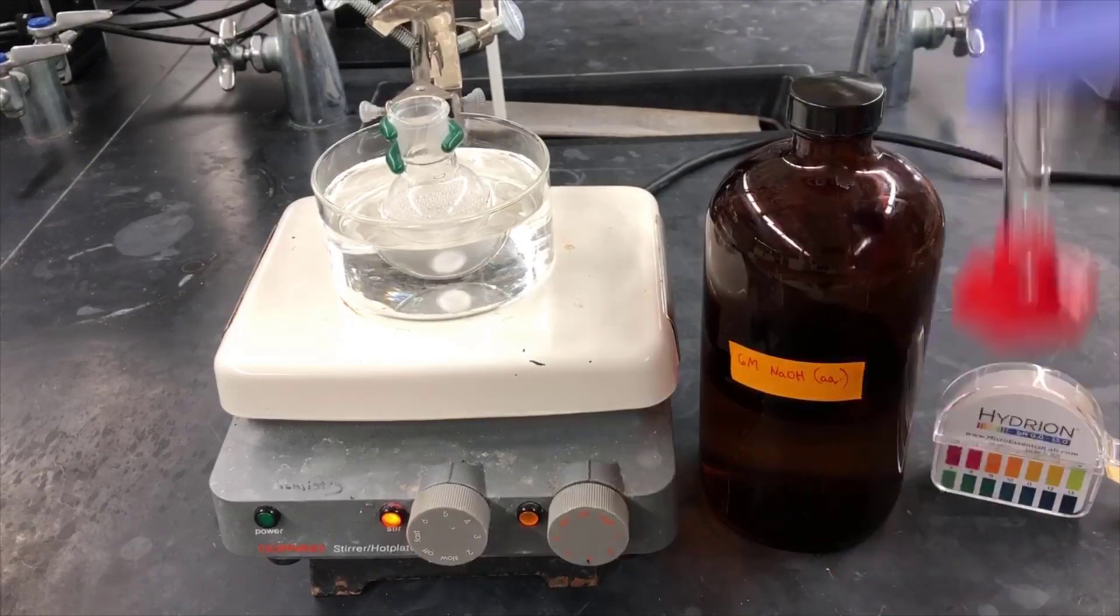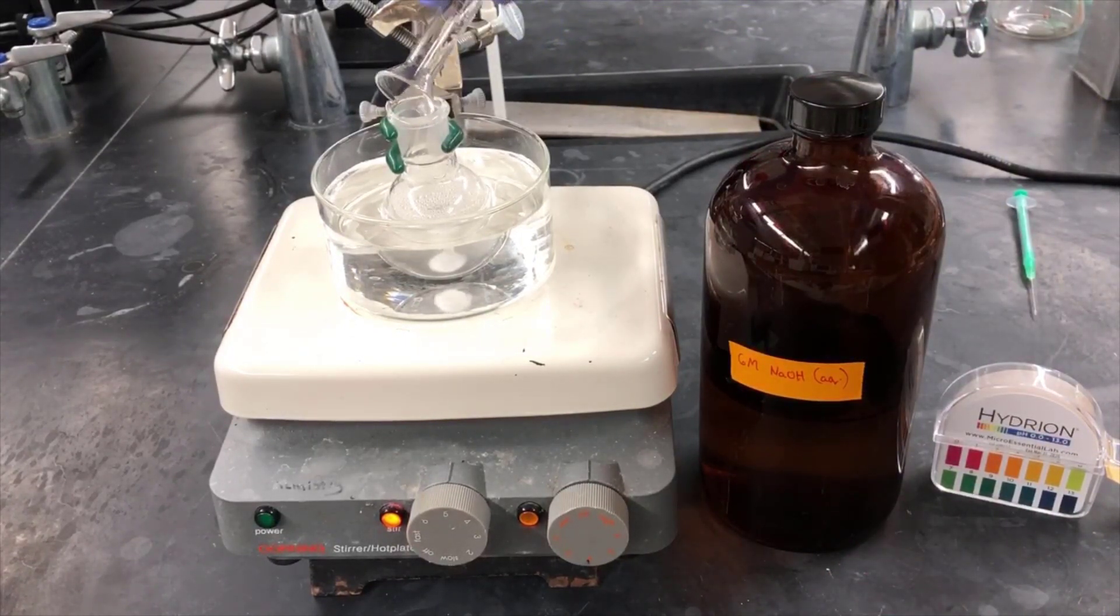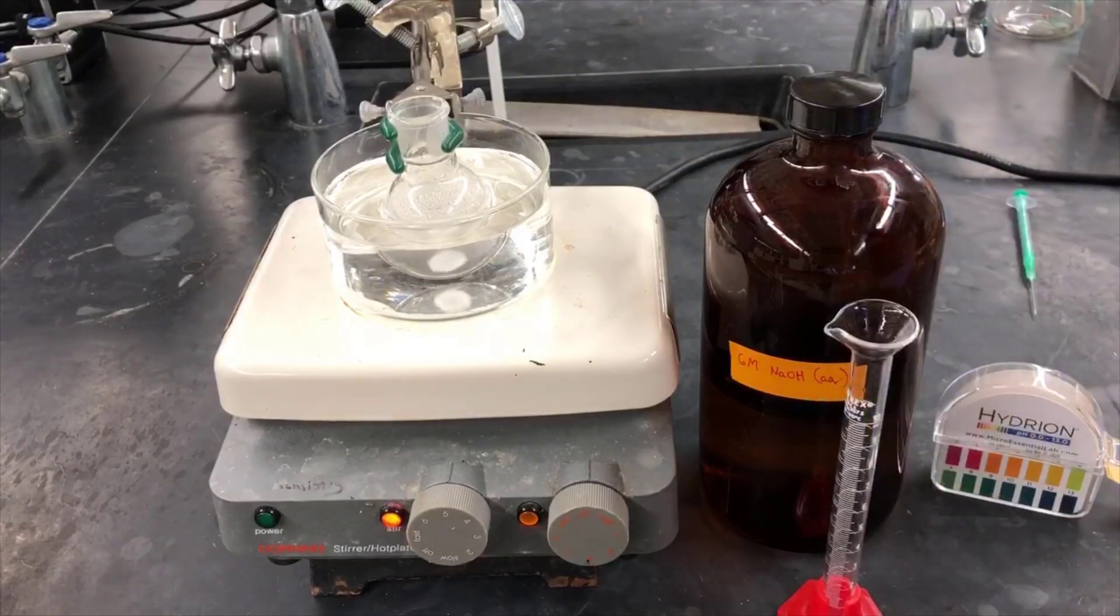The point of adding the sodium hydroxide is to deprotonate the acetic acid catalyst that we added in the reaction. Acetic acid is volatile, and it could co-distill in the next step. Converting it into a salt makes it non-volatile and prevents it from distilling over.